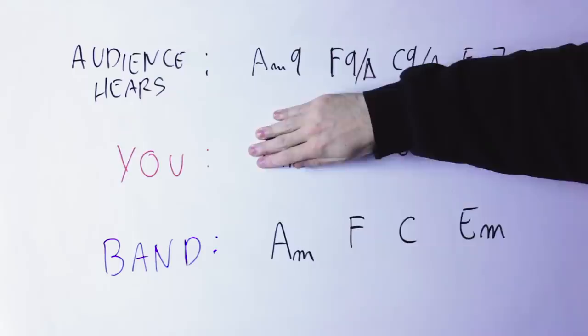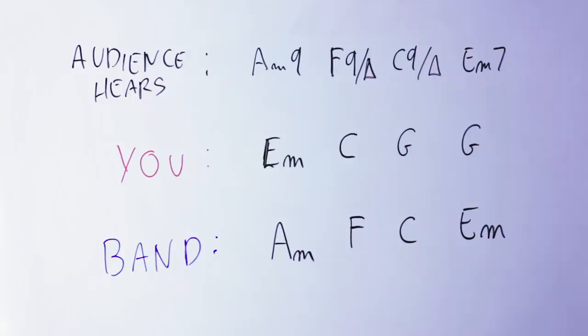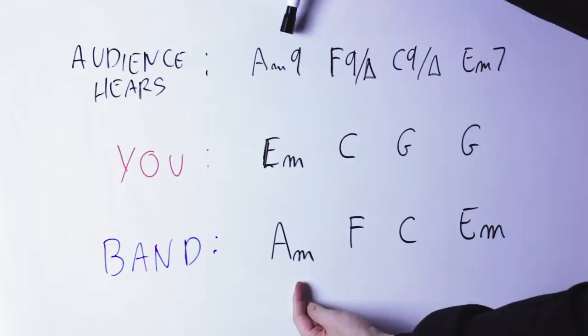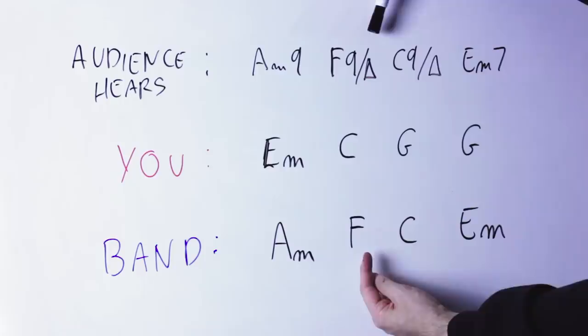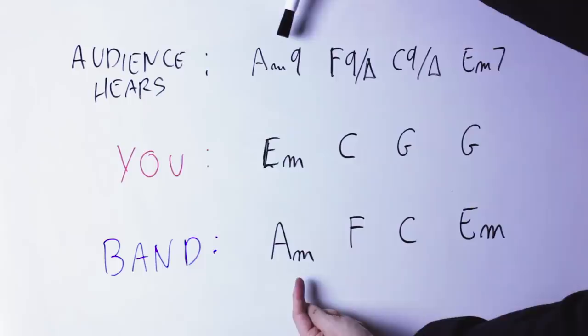Now let's play the superimposition so the band plays A minor F C E minor. I play E minor C G G. Now the second version definitely sounds more sophisticated and interesting.